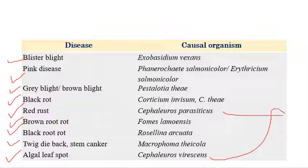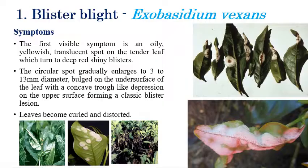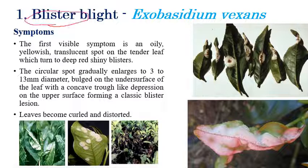All diseases listed are fungal diseases except red rust and algal leaf spot, which are both algal diseases. Now we will see each one in detail. The first is blister blight, caused by Exobasidium vexans. The name itself indicates a blister-like appearance can be seen on leaves.